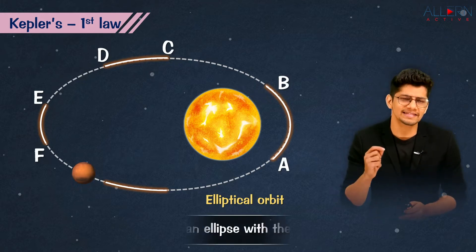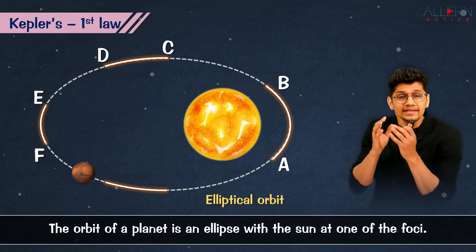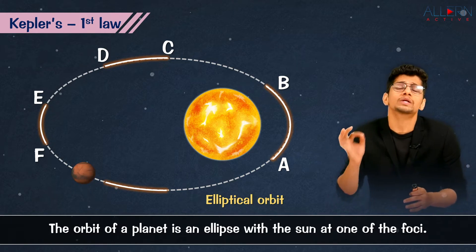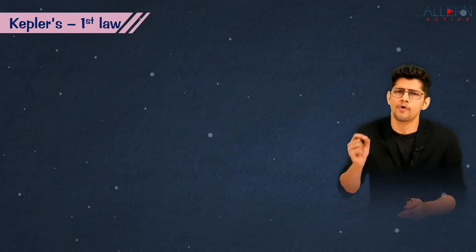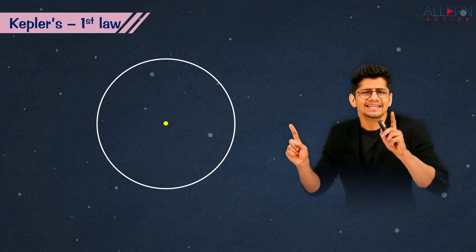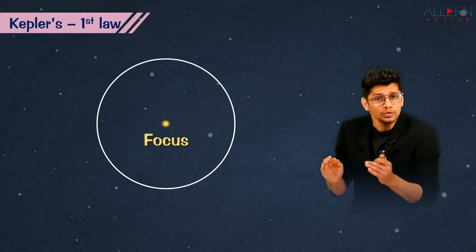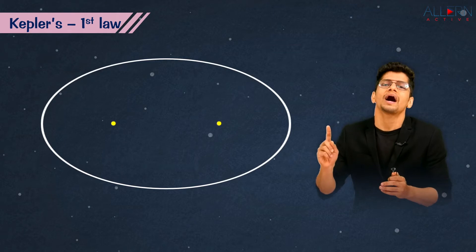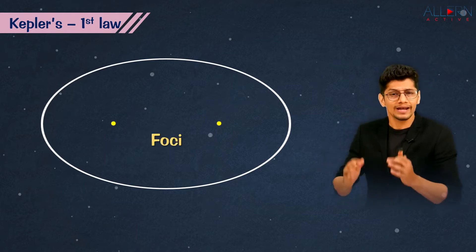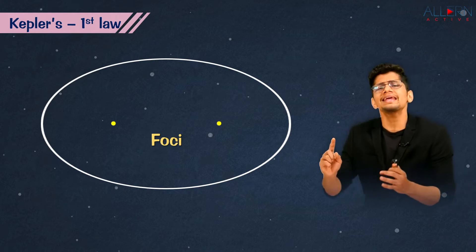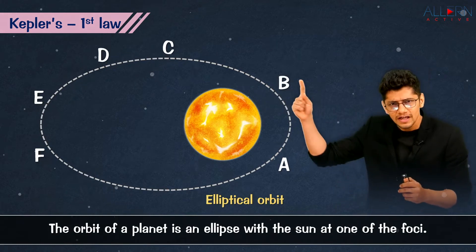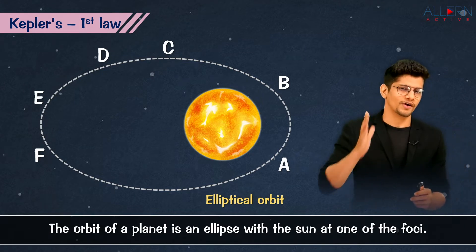That is where he formulated the first law: the orbit of a planet is an ellipse with the Sun at one of the foci. You understand the orbit is an ellipse, but what does 'foci' mean? A circle has one center, called a focus. But when you stretch a circle, the shape changes and it now has two centers — more than one focus is called foci. The Sun sits at one of these foci.